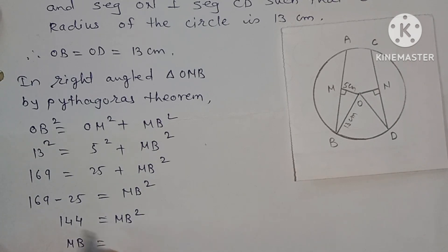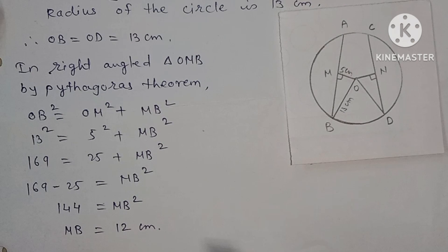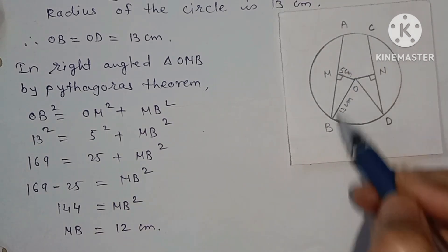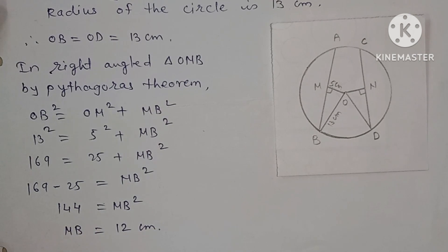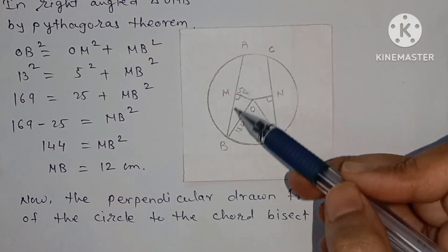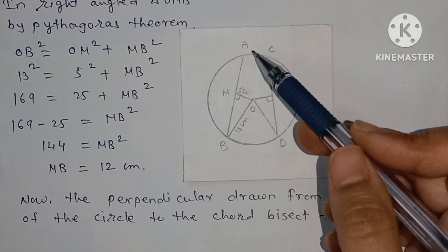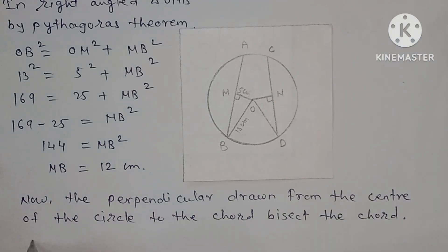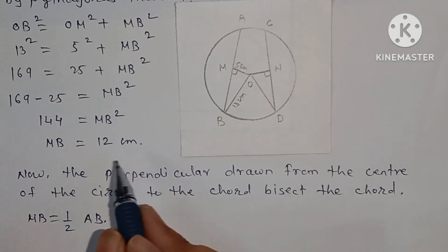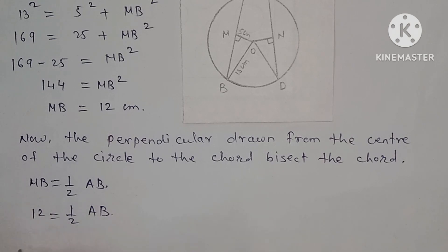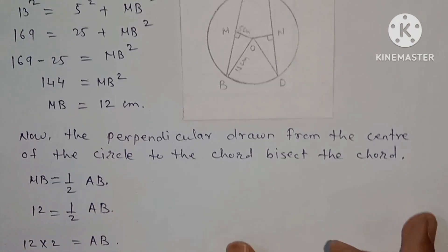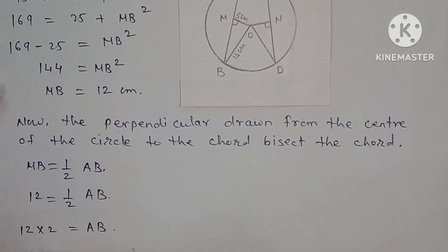Taking the square root, MB = 12 centimeters. The perpendicular drawn from the center bisects the chord, so MB = half of AB. Since MB = 12, we have 12 = half of AB, therefore AB = 12 × 2 = 24 centimeters.